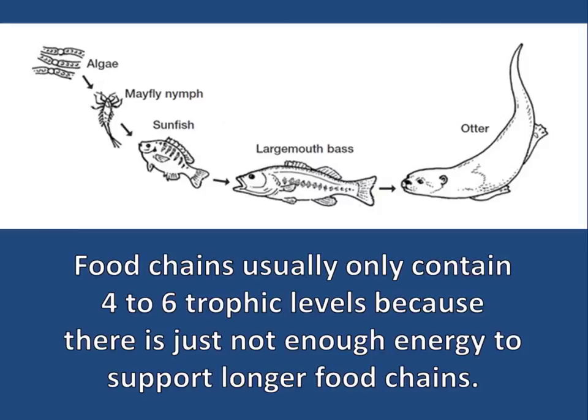Food chains usually only contain four to six trophic levels because there is just not enough energy to support longer food chains.